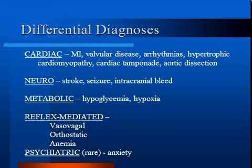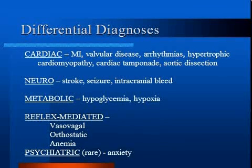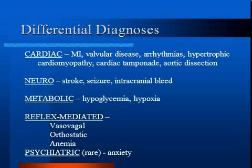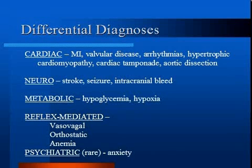Neurologic abnormalities that can cause syncope include stroke, seizure, and intracranial bleed like subarachnoid hemorrhage. Metabolic abnormalities like hypoglycemia and hypoxia can also cause syncope.